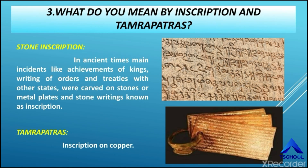Tarpatras are made from the skin of the palm tree. The skin of the palm tree is used for writing and is called Tarpatras. Although most of the Brahmin manuscripts have been destroyed by insects, some manuscripts are preserved in temples, libraries, and government museums.